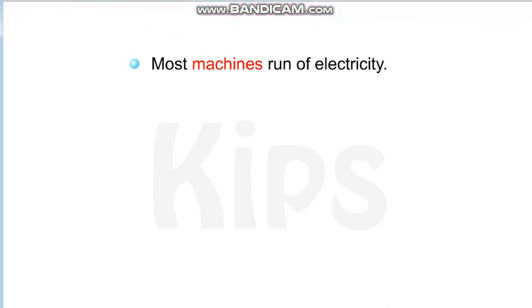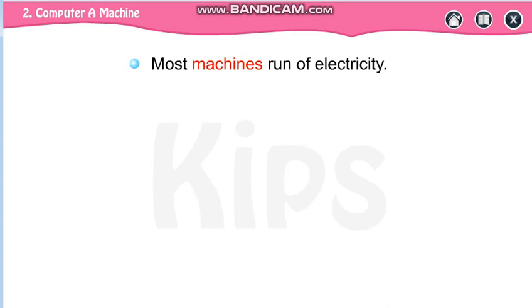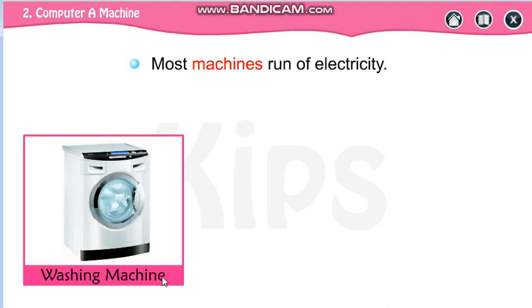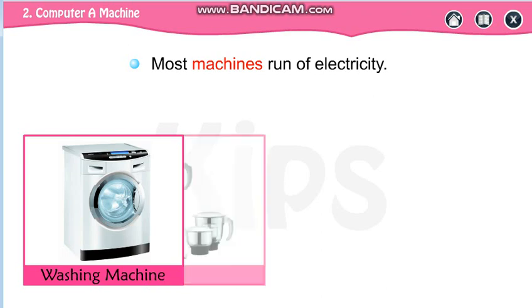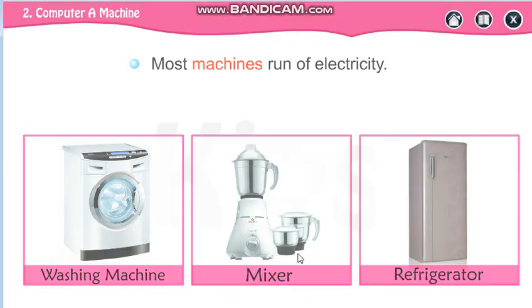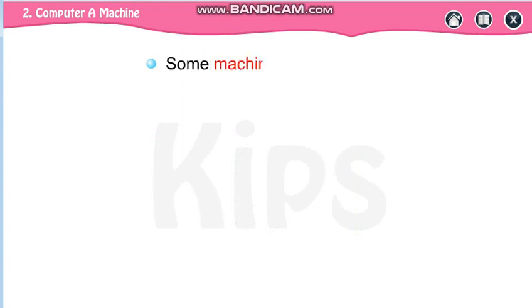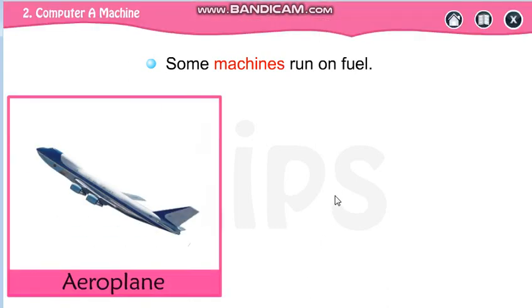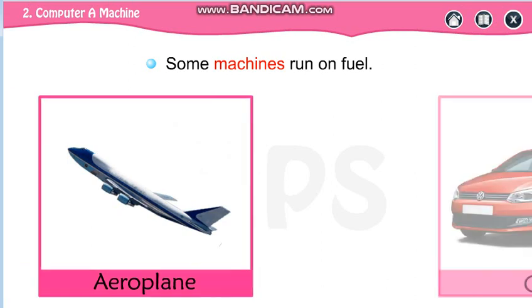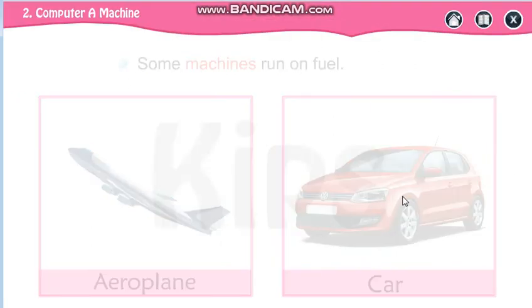Most machines run on electricity. Generally when we run machines, we need electricity — like a washing machine or a mixer. But not all machines. Some machines run on fuel, which means petrol. For example, an aeroplane runs on fuel, and a car also runs on fuel.